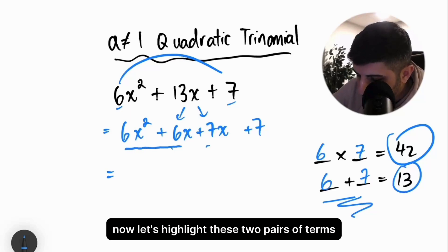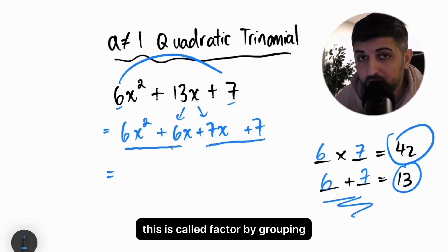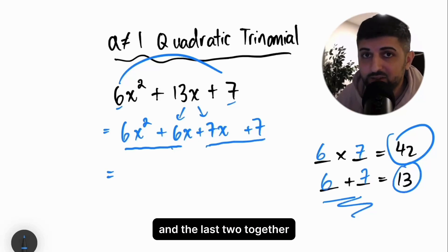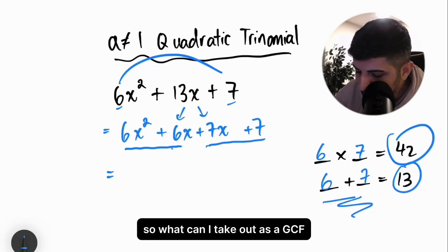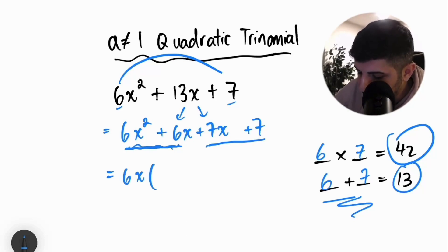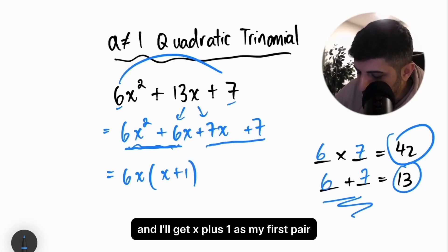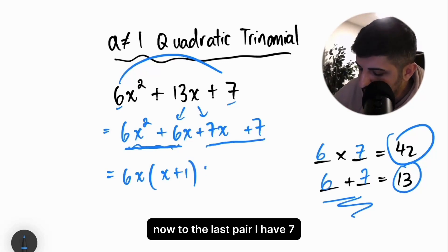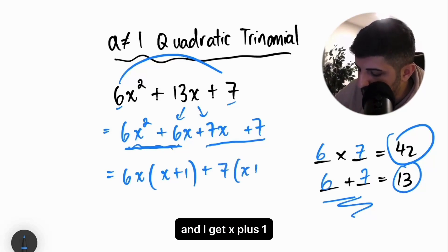Now, let's highlight these two pairs of terms. This is called factor by grouping because I'm grouping the first two and the last two together. What can I take out as a GCF from the first two terms? I can take out 6x and I'll get x plus 1 as my first pair factored. Now, out of the last pair, I have 7. I can take out a 7 and I get x plus 1.